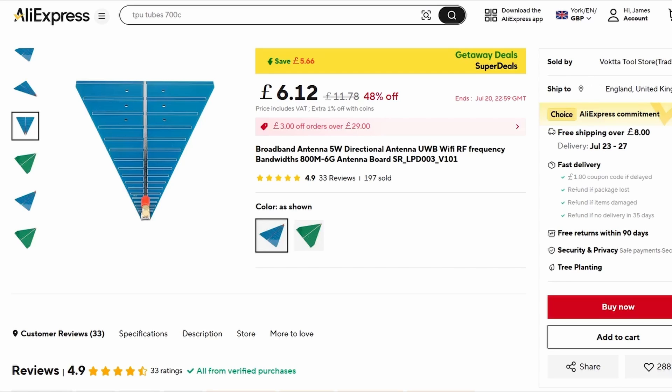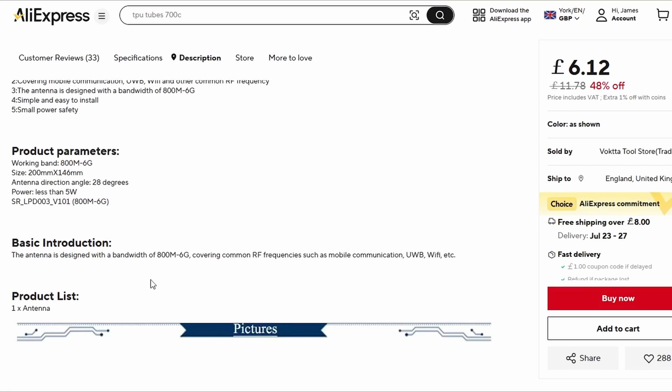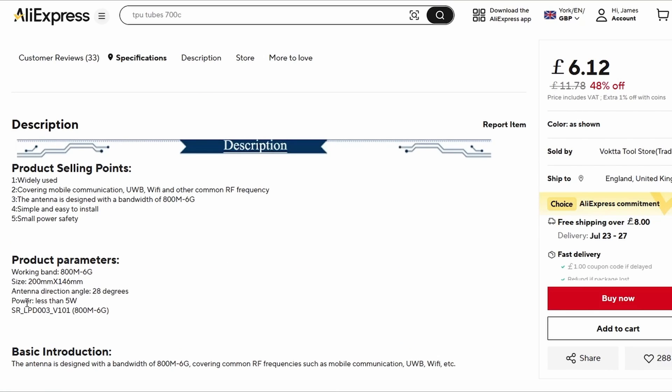And it's relatively cheap. I actually paid a little bit less than this. I paid something like £5.50. It really is a bargain. So if we look at it, there's not really any information. Basically, the maximum power you can put into it is claimed to be less than five watts. The bandwidth is from 800 megahertz to six gigahertz, as I already said, and it's a directional antenna.